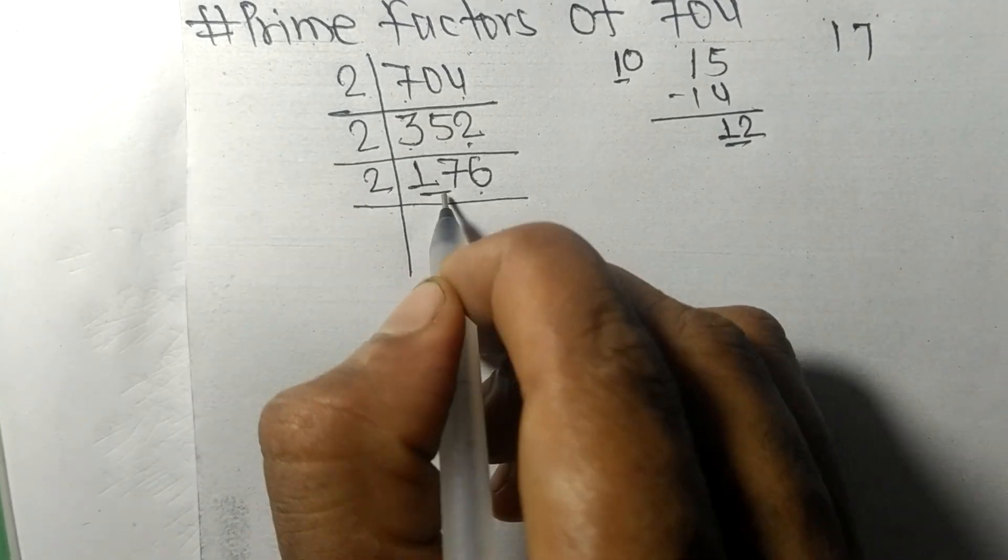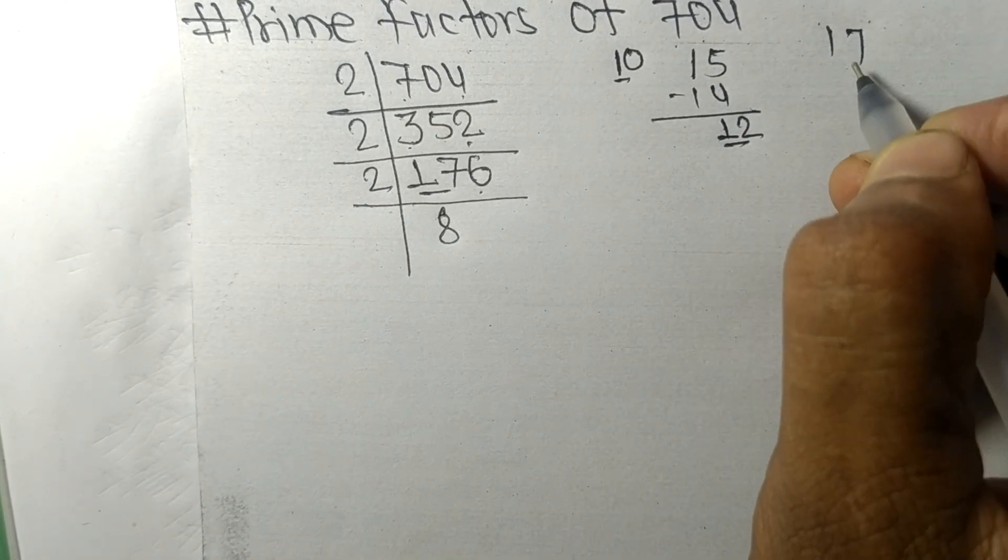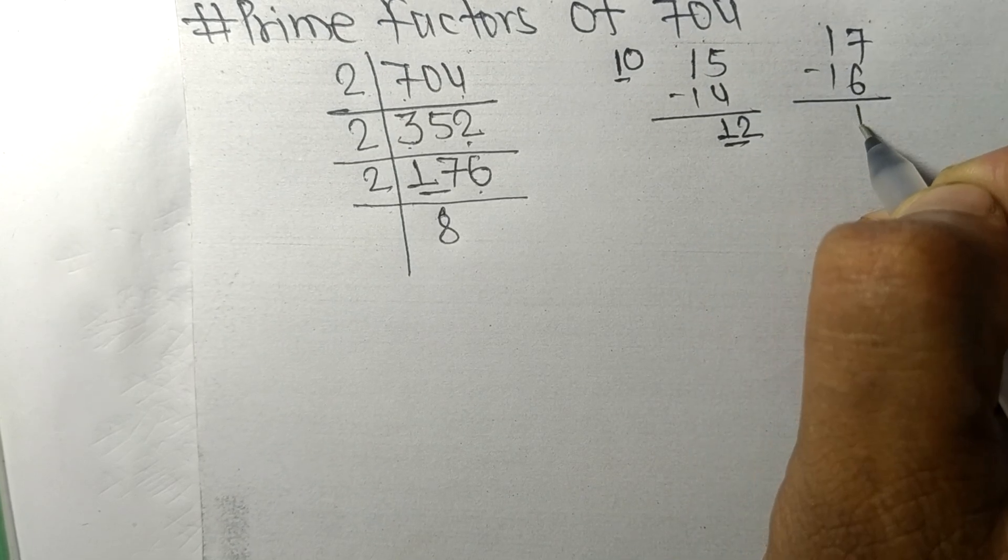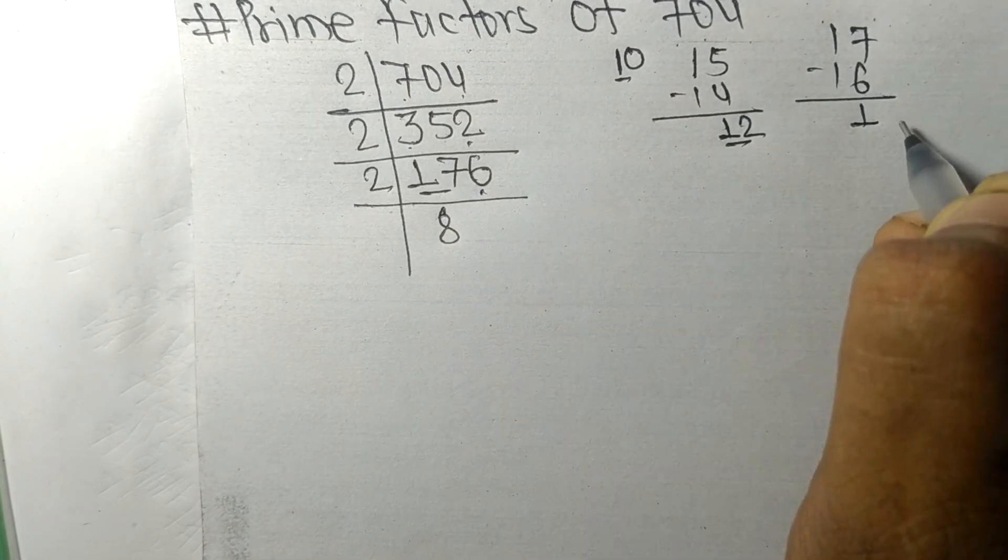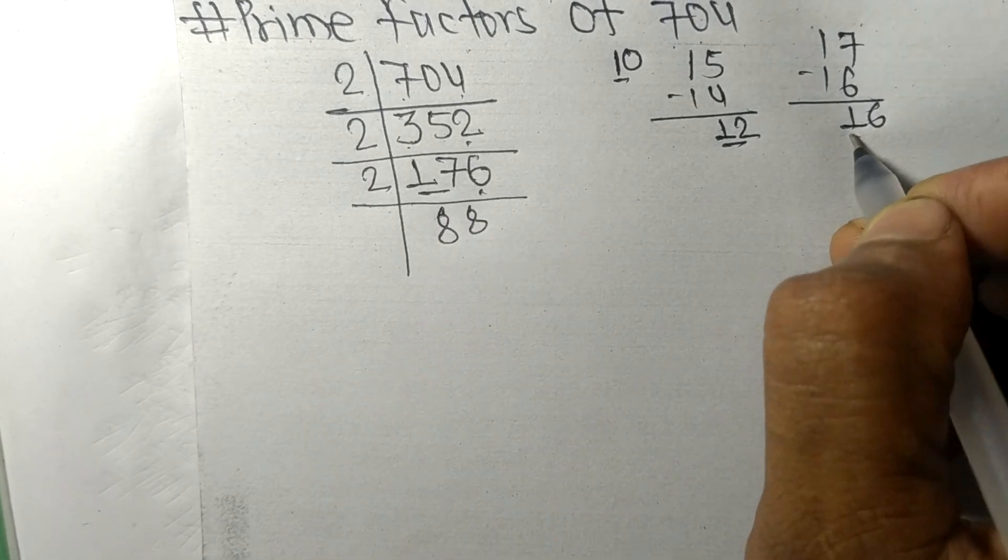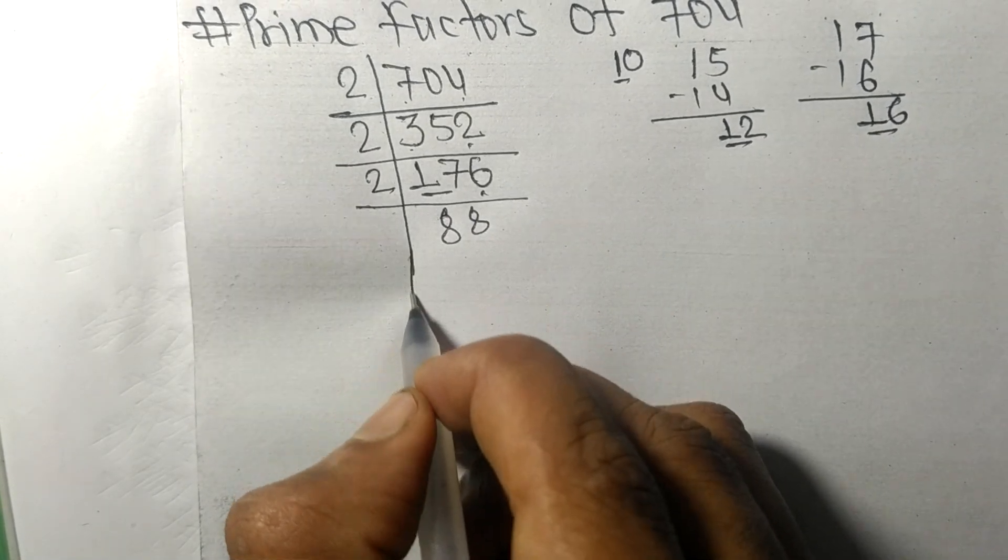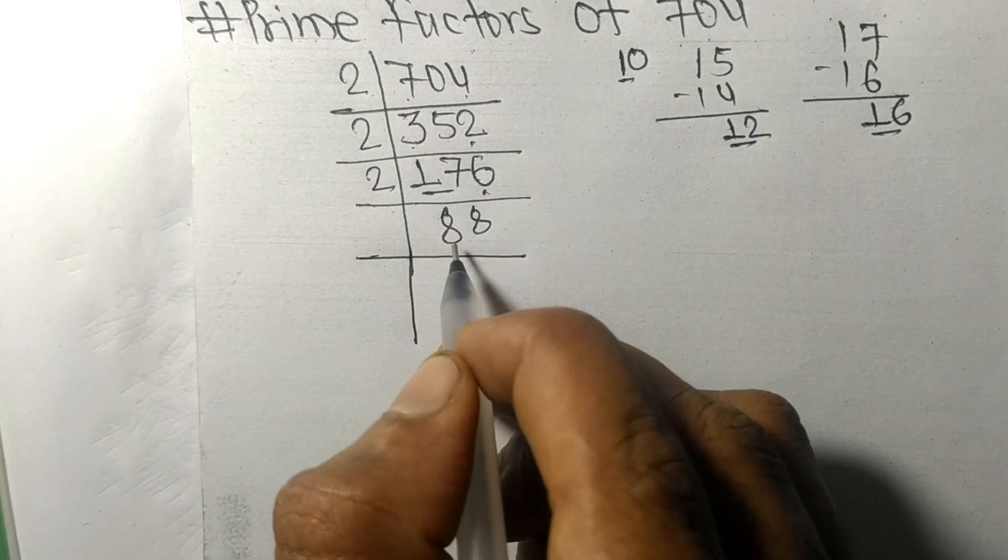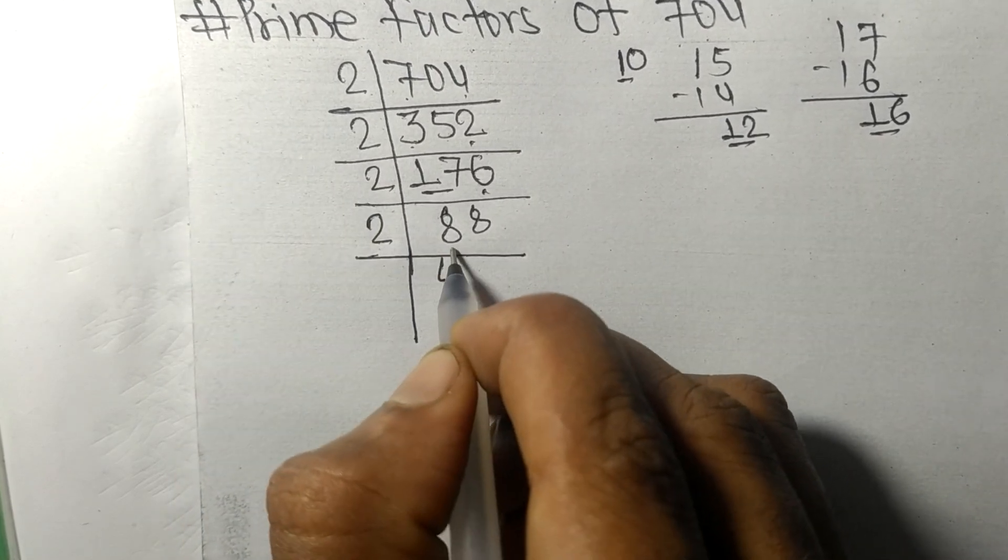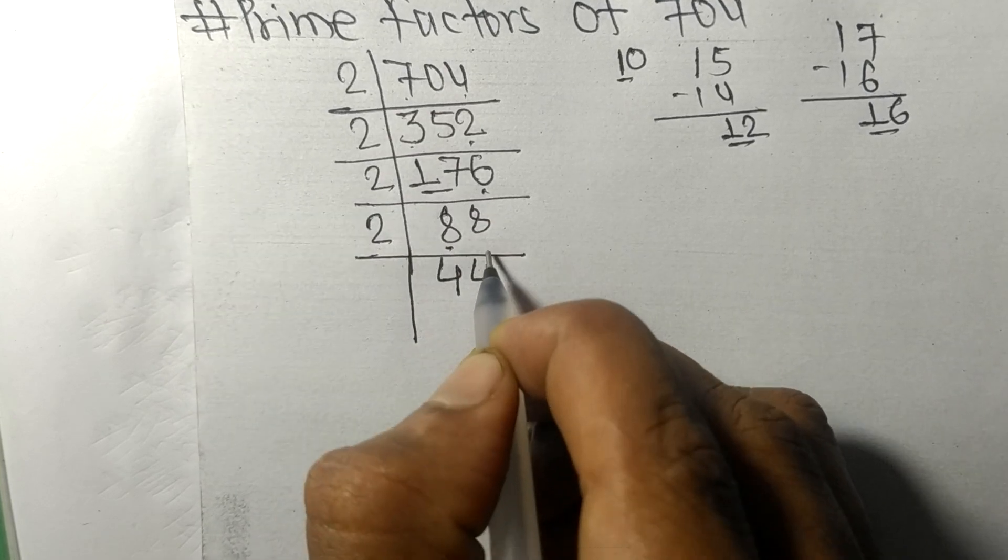So now we got 88, which is divisible by 2. 2 times 4 mean 8, 2 times 4 mean 8. Again we get even number 4 at last, so divisible by 2. 2 times 2, 2 times 2, 4. 2 times 2, 4.